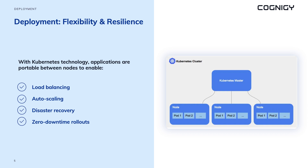A Kubernetes cluster is a set of nodes that run containerized applications. These nodes can be physical or virtual machines that work together to form a cluster. The master node orchestrates the applications deployed on worker nodes, manages the overall state of the cluster, schedules and coordinates applications, and ensures they are functioning correctly. Applications can be moved between nodes, allowing for load balancing and autoscaling. As demand increases, new nodes can be added and existing applications moved to distribute workload evenly. Disaster recovery is also made easier — applications can be moved to a different node if one fails.